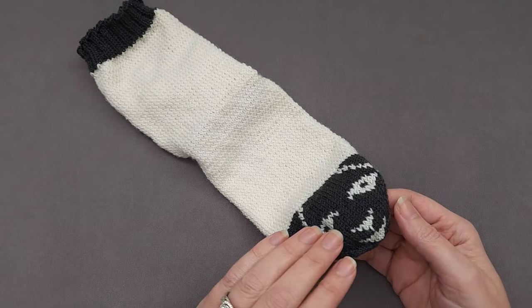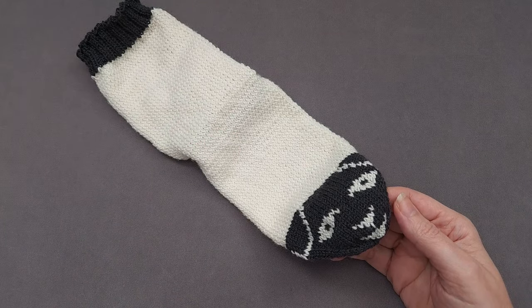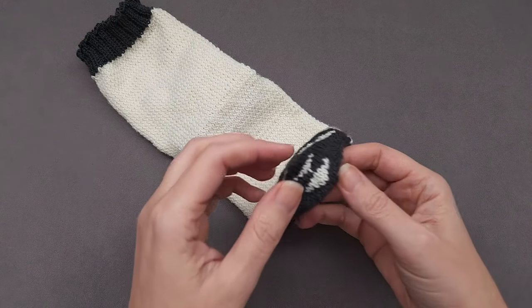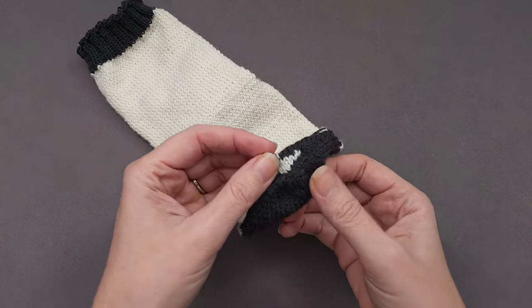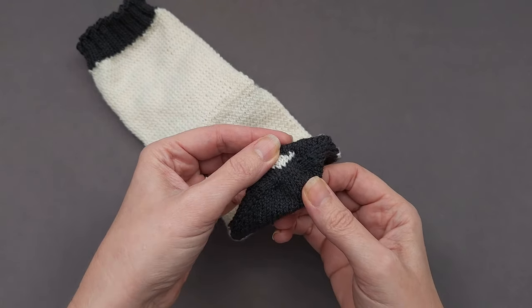It works really well for toe-up socks, bottom-up bags, and top-down hats and mittens. Since the cast on is double-sided, after you start knitting in the round you end up with an enclosed end, sort of like the bottom of a toothpaste tube.